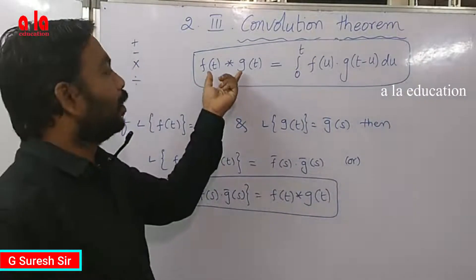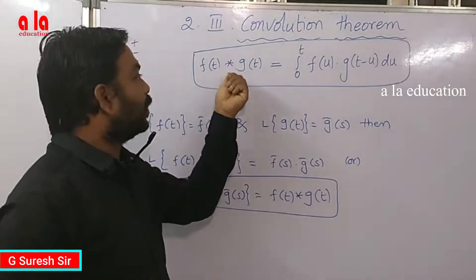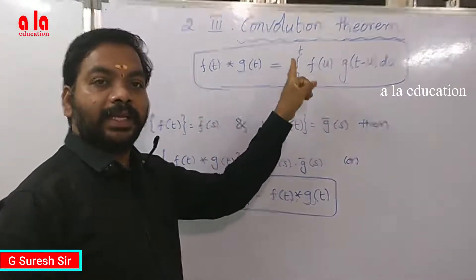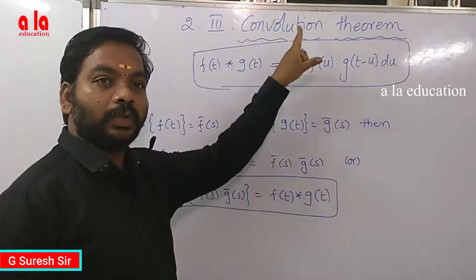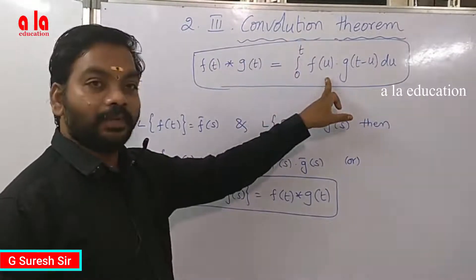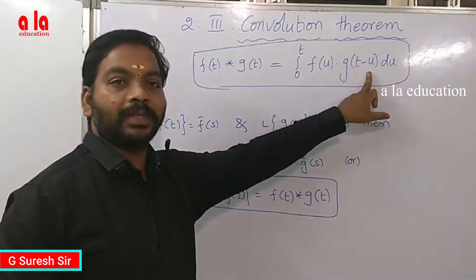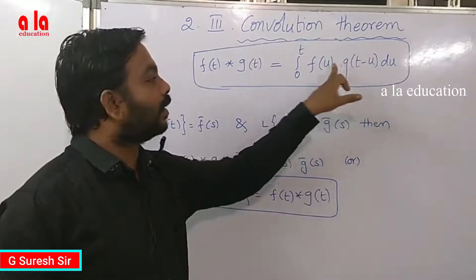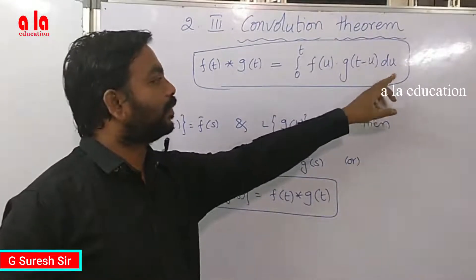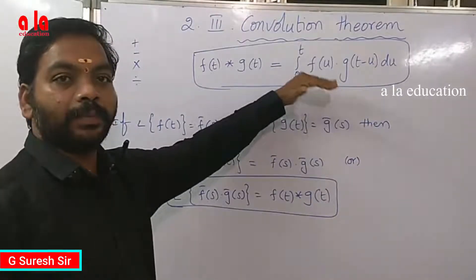Convolution product of two functions f and g: convolution product of f and g is equal to integration from 0 to t of the first function in terms of u and the second function in terms of t minus u, as a general product, into du. This is called convolution product.